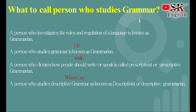Our next question is: what do you call a person who studies grammar? A person who investigates the rules and regulation of a language is known as a grammarian. A person who studies grammar is known as grammarian، while a person who dictates how people should write or speak is called a prescriptivist or prescriptive grammarian۔ لیکن اگر کوئی بندہ descriptive grammar کو study کرتا ہے اس کو ہم descriptivist یا descriptive grammarian کہیں گے۔ Prescriptive grammar اور descriptive grammar کے types آگے study کریں گے۔